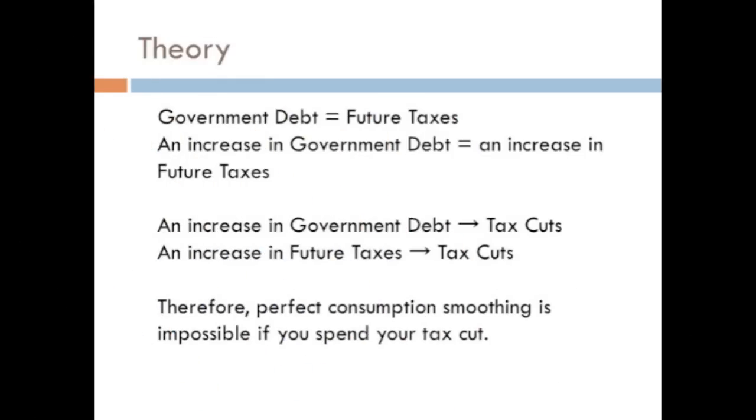Assuming that the government can only pay off its debt with future taxes, an increase in government debt will lead to an increase in future taxes. Because of this, an increase in government debt funding tax cuts is actually just an increase in future taxes funding tax cuts. Therefore, when consumers want to practice perfect consumption smoothing, they will be at a loss if they spend their tax cut.